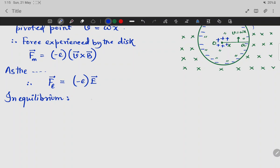So minus E, E plus minus E, v cross B, it is equal to 0. Equilibrium means minus CE plus minus E v cross B is equal to 0. That cancels, E is equal to minus v B is equal to minus B omega x.